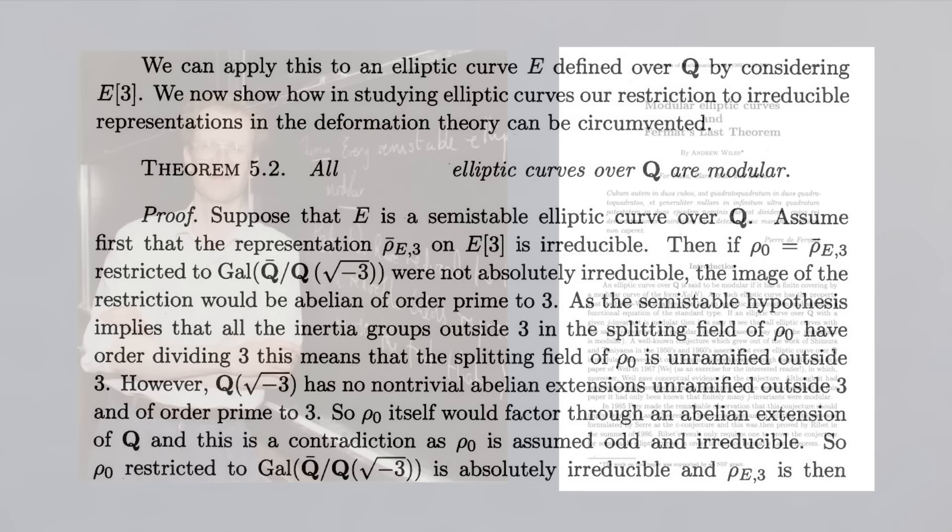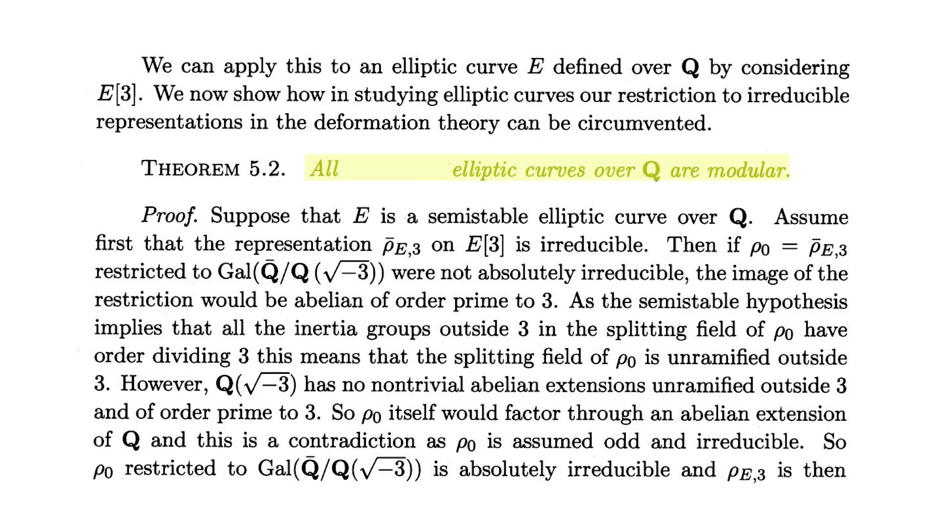Specifically, he proved the following statement: Every blank elliptic curve over Q is modular. The blank over here is an adjective, semi-stable. And it was known that this statement was enough to prove that Fermat's Last Theorem was true.